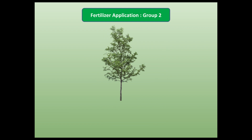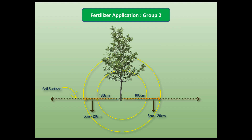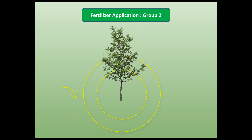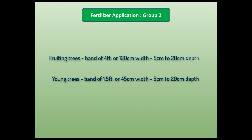In young Group 2 trees, the mouths are located starting at 50 centimeters from the trunk, spreading up to 100 centimeters, and 5 to 20 centimeters below the soil surface. This means fertilizers must be applied in all directions in a band of four feet width for fruiting trees and 1.5 feet (45 centimeters) for young trees, placing the fertilizer 5 centimeters below the soil surface.